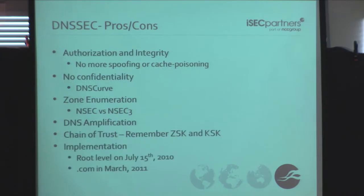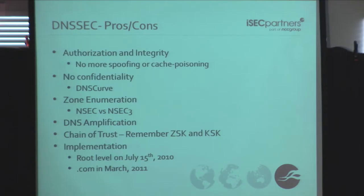Finally, there's the chain of trust. We're using zone signing keys and key signing keys to validate records, and we're validating each step of that chain until it gets to the root zone. We have to pin on something, and right now we're pinning on the root zone, which is owned by IANA — the government. Take that as you will. Some people say that's really good; others say they don't trust it. That's more a matter of interpretation.